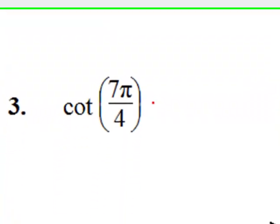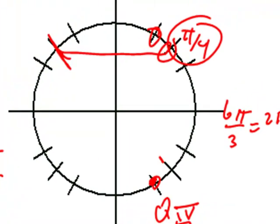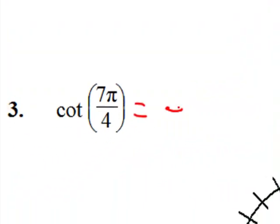Seven pi over four is in quadrant four. And we're looking at the cotangent. So first of all, cotangent in quadrant four is negative. I'll put a minus sign. Then it's related to pi over four because of the over four. And cotangent of pi over four is one. So this value is negative one.